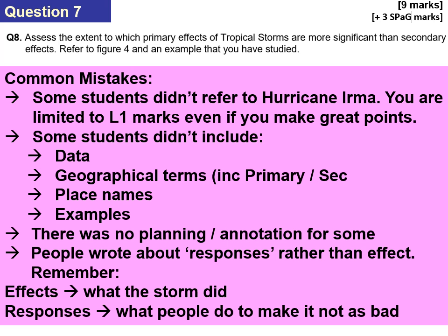The final question asks you to assess the extent to which the primary effects of tropical storms are more significant than the secondary effects, referring to figure four and an example you have studied. Common mistakes: students didn't refer to Hurricane Irma — you're limited to level one if you don't. Students also missed data, geography words, primary/secondary terminology, place names, and confused effects with responses. Effects are what the storm does; responses are what people do afterwards to reduce the impact.